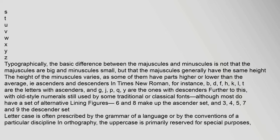in Times New Roman, b, d, f, h, k, l, t are the letters with ascenders, and g, j, p, q, y are the ones with descenders. Further to this, with old-style numerals still used by some traditional or classical fonts, although most do have a set of alternative lining figures, 6 and 8 make up the ascender set, and 3, 4, 5, 7 and 9 the descender set.